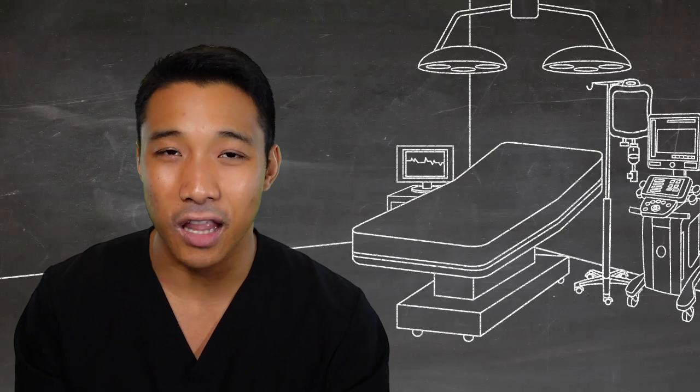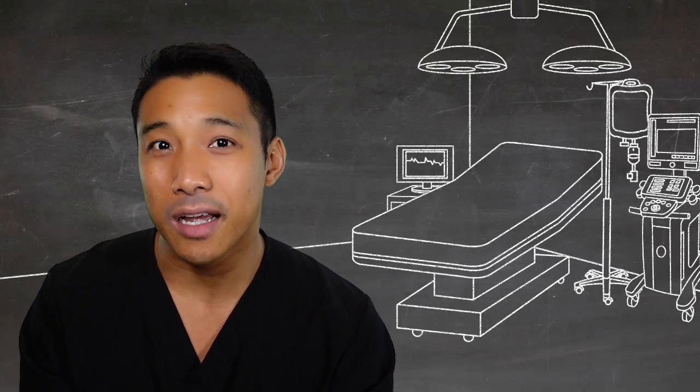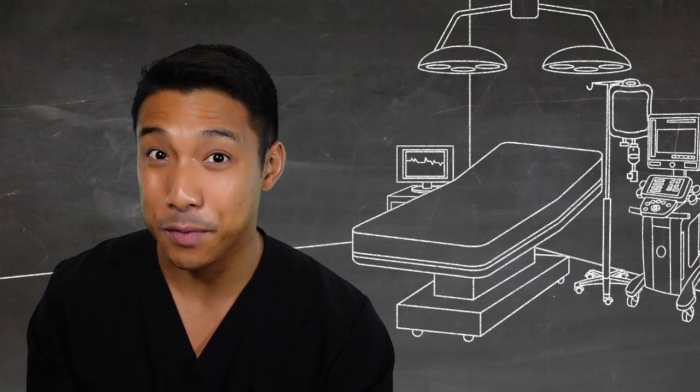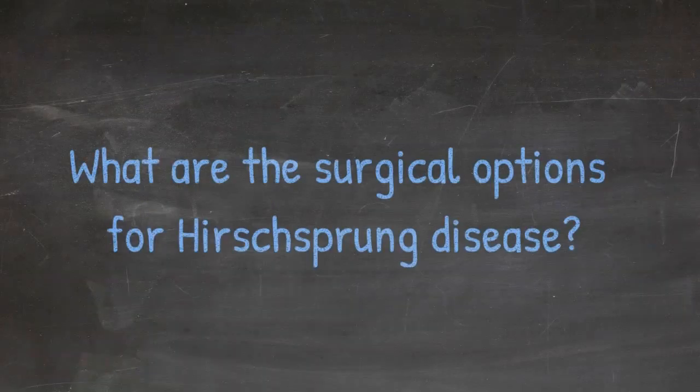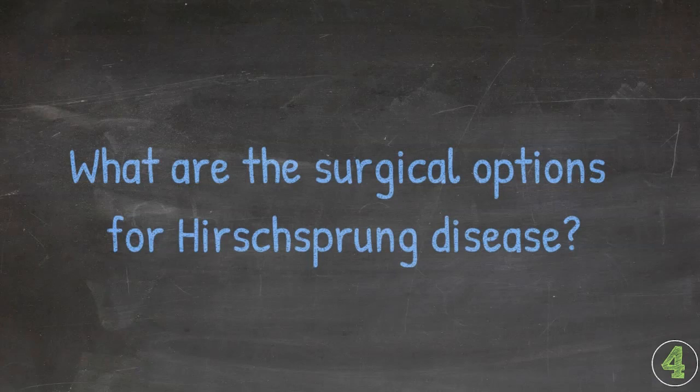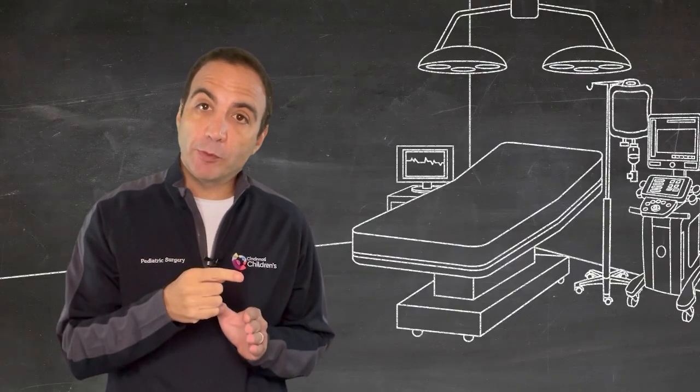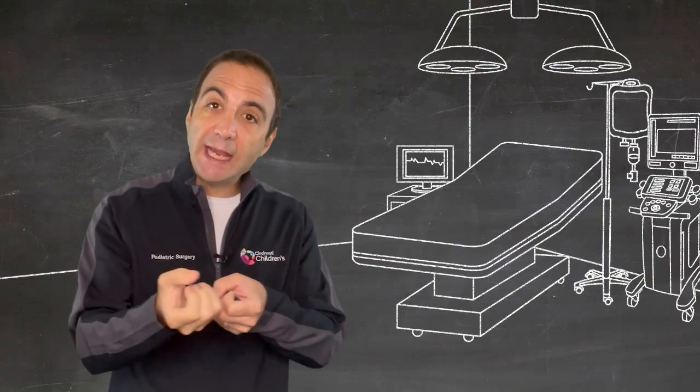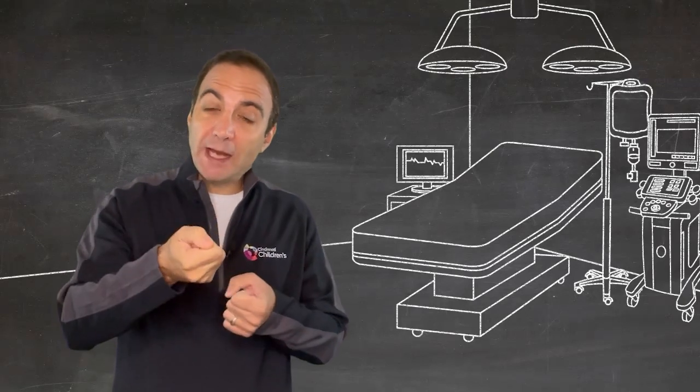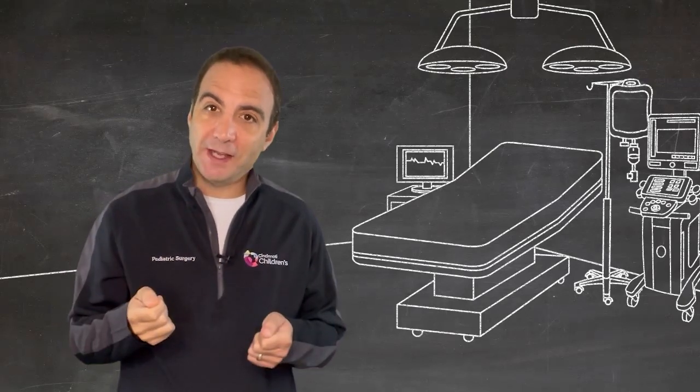All right, so we looked at our preoperative imaging. We're coming up with a plan for surgery, but keep in mind we have some options for surgical approach. The three procedures for Hirschsprung disease all involve a transanal approach of removing the aganglionic colon and pulling down healthy colon and sewing it to the anus.